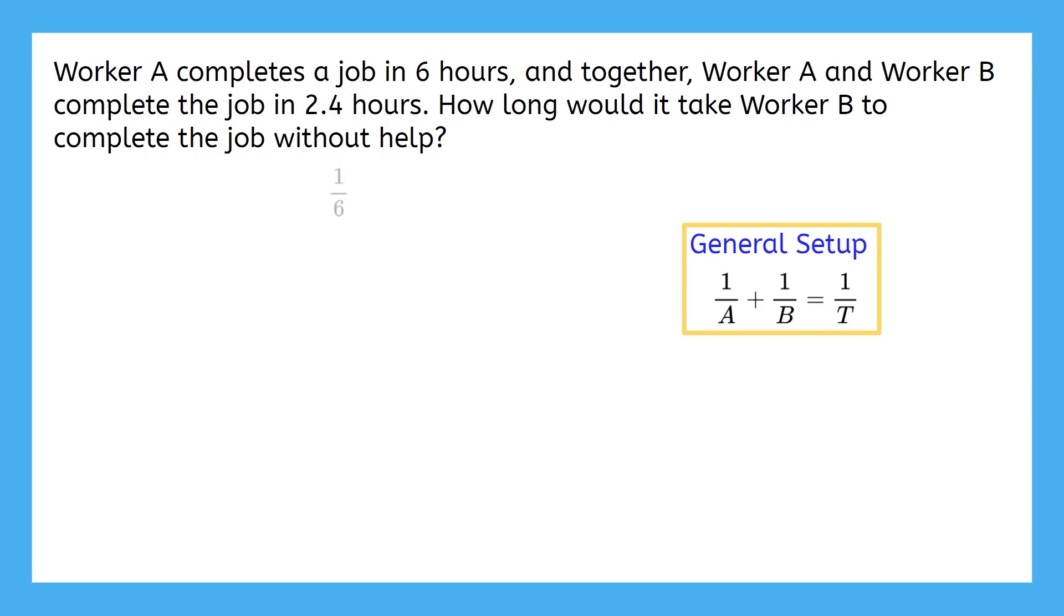The reciprocal of worker A's time here is 1 over 6. And we don't know worker B's time, so the reciprocal of this would be 1 over x, with x representing worker B's time. But we do know that together they complete the job in 2.4 hours. So let's find the reciprocal of 2.4.